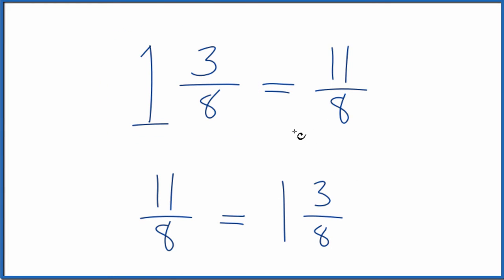So we know we did this correctly. The mixed number 1 and 3/8 equals the improper fraction 11/8. This is Dr. B.